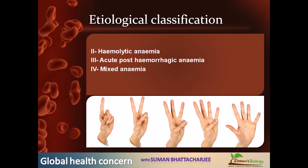The fourth kind is mixed anemia. An example is megaloblastosis associated with hemolysis, where hemolysis occurs alongside megaloblastosis.